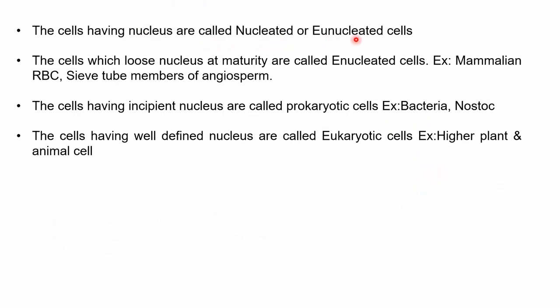Cells having a nucleus are called nucleated cells. Cells that lose the nucleus at maturity — for example, mammalian RBCs or sieve tubes in angiosperms — are called enucleated cells. Cells having an incipient or primitive nucleus where DNA is present in naked form are called prokaryotic cells, examples being bacteria and cyanobacteria. Cells with a well-defined nucleus — like higher plant and animal cells — are eukaryotic cells.